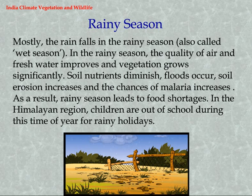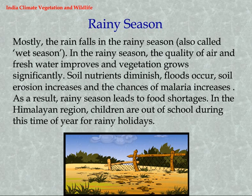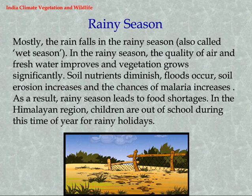The rainy season is also called the wet season. In the rainy season, the quality of air and fresh water improves and vegetation grows significantly. However, soil nutrients diminish, floods occur, soil erosion increases, and chances of malaria increase. As a result, the rainy season can lead to food shortages. In the Himalayan region, children are out of school during this time for rainy holidays.